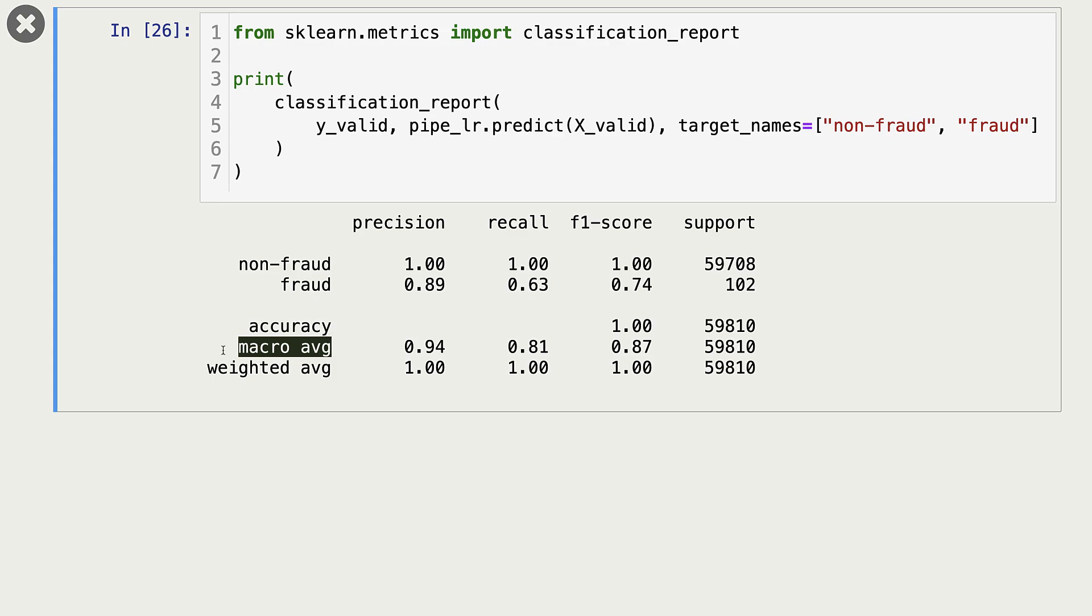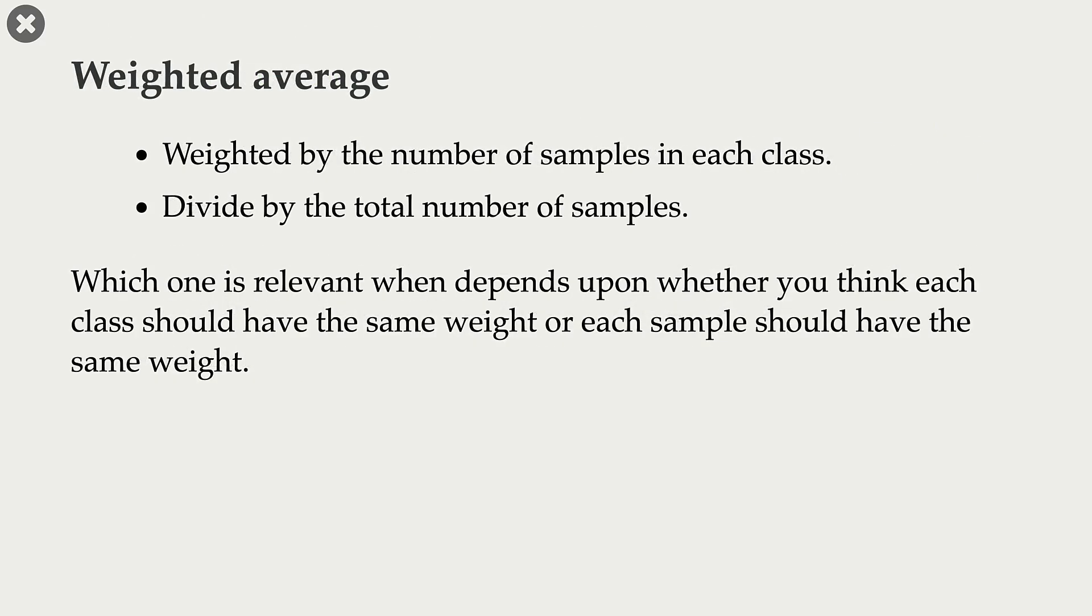On the other hand, in case of weighted average, you give equal importance to each example. So in our particular case, non-fraud has more examples. And so weighted average is one here. Now, which one should be used in what context is up to you. If in your problem, all classes are equally important, then go with macro average. And if each sample is equally important, then go with weighted average.